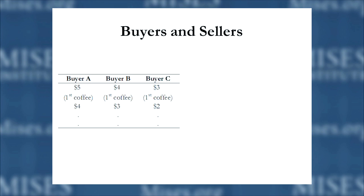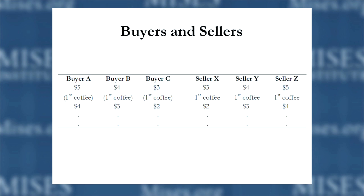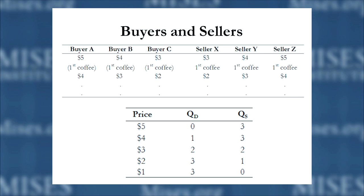Each of the three buyers has a slightly different value scale, hard to compare directly, but what we do know is the maximum each would be willing to pay for coffee. These buyers and sellers can meet in the marketplace to see if there are mutually advantageous exchanges — where sellers have reverse preferences relative to buyers. The easiest way to do this is to construct supply and demand schedules.